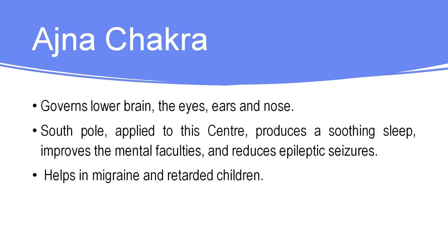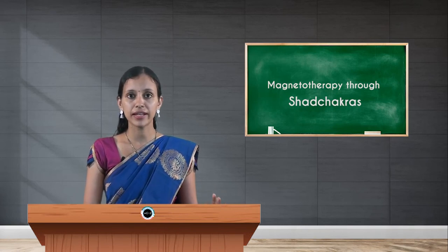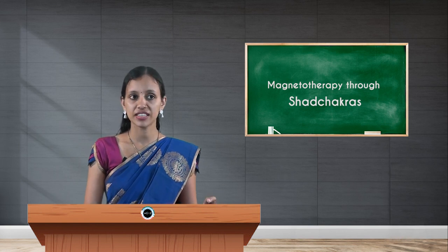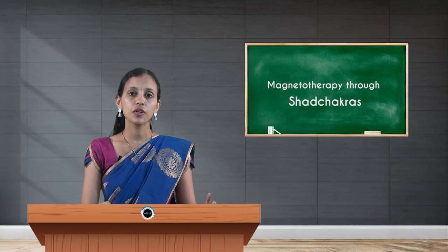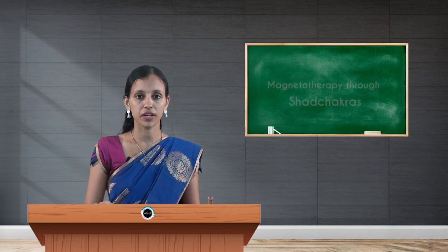For Ajna chakra, the south pole can be used to improve sleep, improve mental faculties, reduce epileptic seizures, and in cases of migraine and mental retardation. Sahasrara chakra is mainly related to the pituitary gland. The south pole can be used to slow down pituitary activity, retard the aging process, and regulate the neuroendocrine system by stimulating the immunological process in the body.